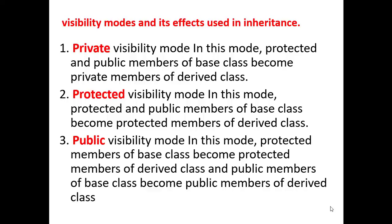If you are inheriting a child class from the parent class using protected mode, then the protected and public members of the base class will become protected members in the child class. The third visibility mode is public: the protected members of the base class become protected members of the derived class, and public members of the base class become public members of the derived class. In no case are the private members inherited — none of the private members can be inherited by the derived class; only protected and public members can be inherited.